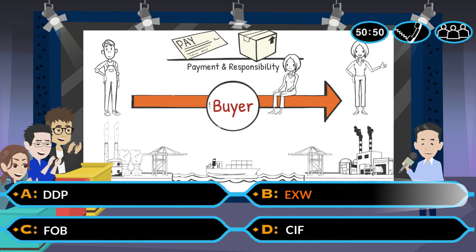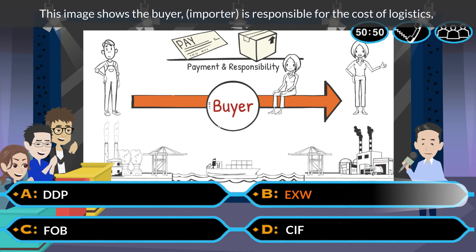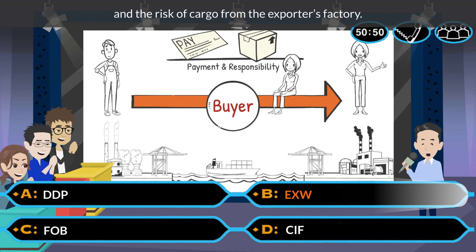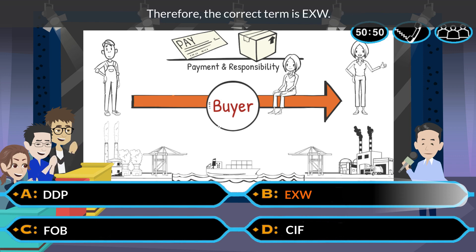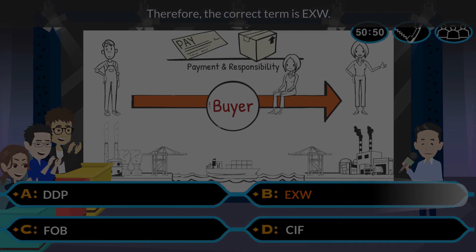The answer is B. EXW. This image shows the buyer, the importer, is responsible for the cost of logistics and the risk of cargo from the exporter's factory. Therefore, the correct term is EXW.